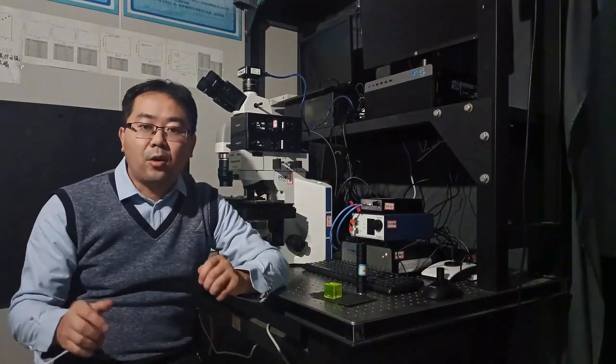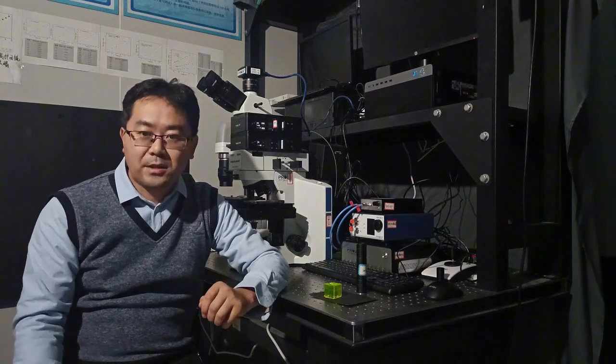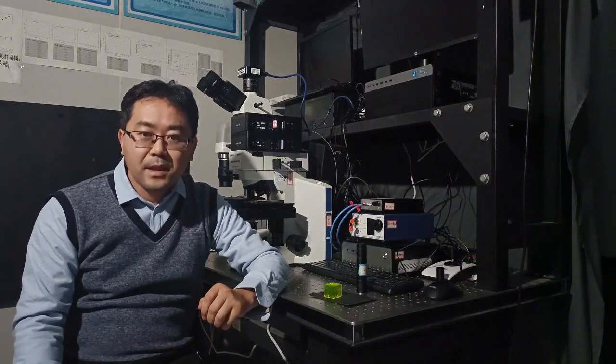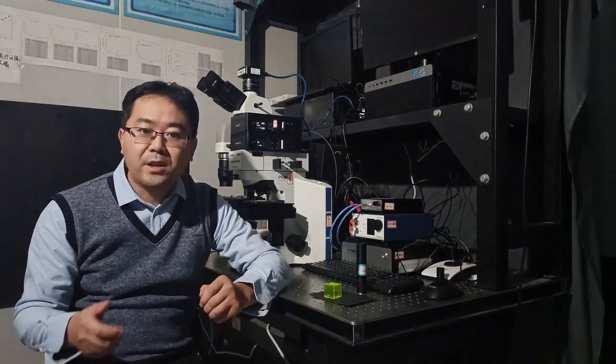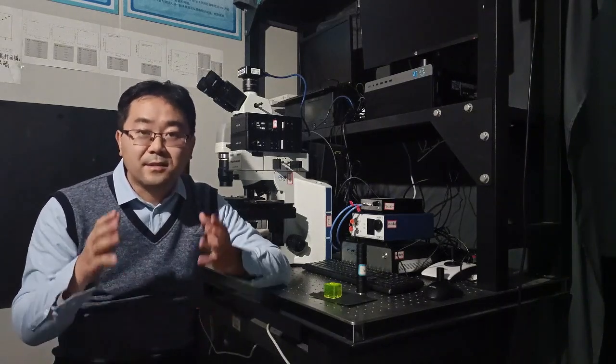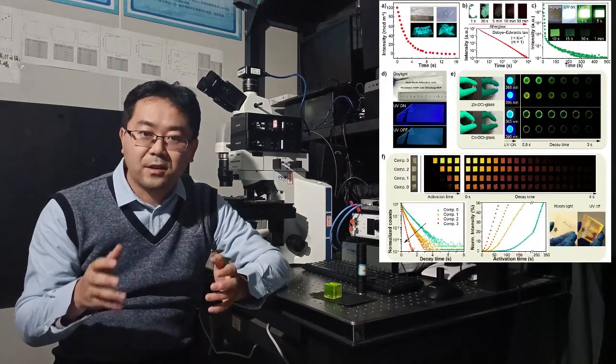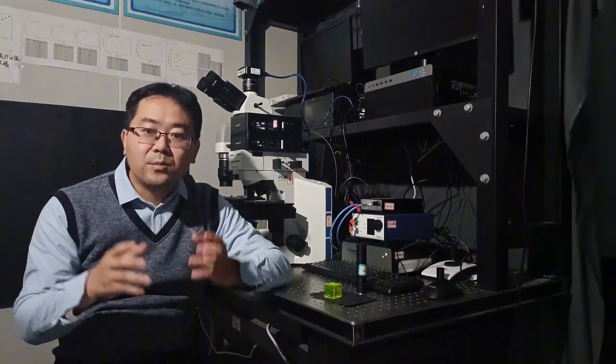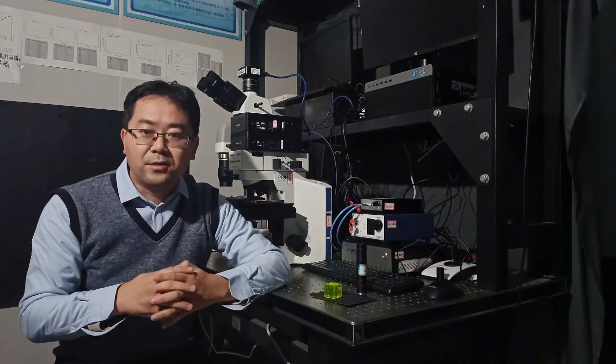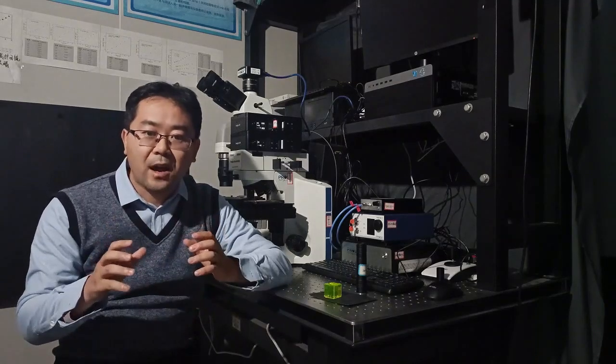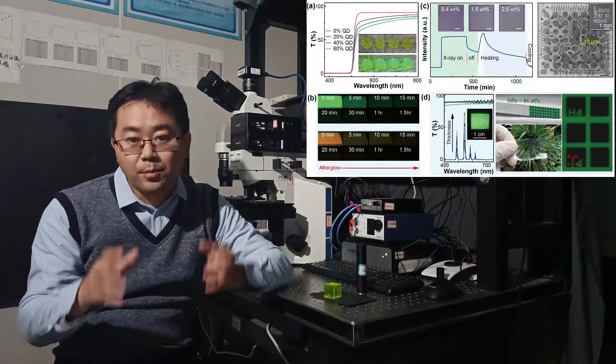Scientists are now working on ways to make them transparent. They are making very good progress. One promising method is to reduce the number of interfaces by synthesizing single crystal and phosphorescent organics. Another approach combines the refractive index and particle size to create transparent afterglow glass and nanocomposites.